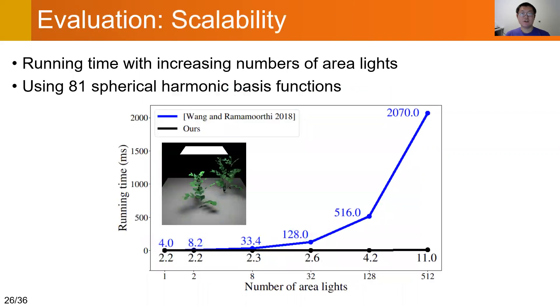Next, we show that our method scales well to multiple area lights. We use the first 81 SH basis functions in all the following experiments. The running time of the previous methods increases linearly in the number of lights.